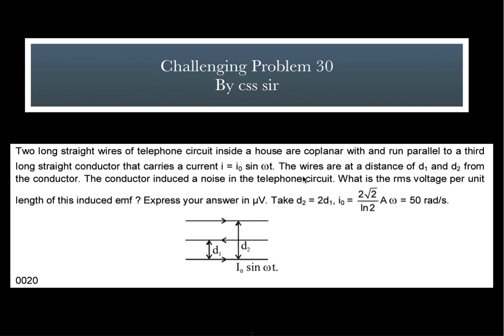Now, coming to the next problem. Two long straight wires of telephone circuit inside a house are co-planar with and run parallel to the third long wire. Current is given to you. The wires are at a distance D1 and D2 from the conductor. The conductor induces noise in the telephone circuit. What is the RMS voltage per unit length of this induced EMF? Express your answer in micro volt. Take D2 is equal to 2D1. This is another interesting problem from EMI chapter. You are given three wires in which one of the wire is having a current. Other wires will have current, but that will be induced current. You are supposed to calculate RMS voltage per unit length of this induced EMF.